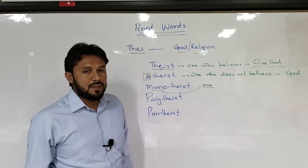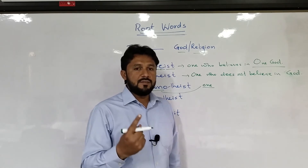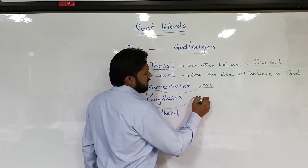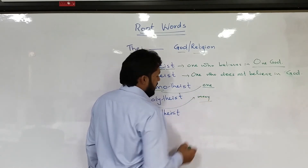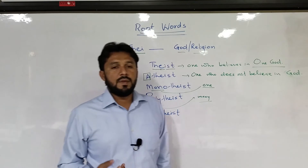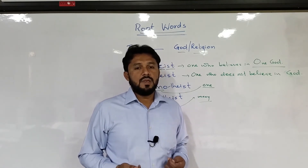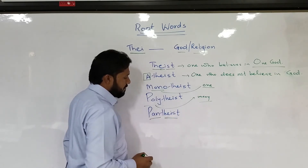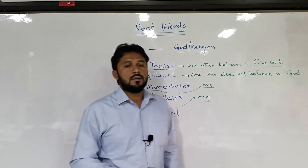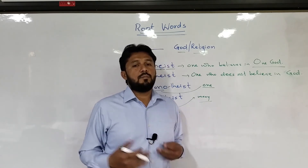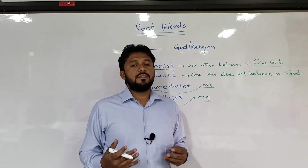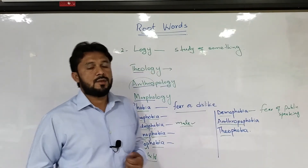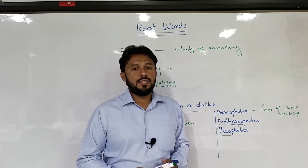Next, 'mono' means one, so 'monotheist' means a person who believes in one God. 'Poly' means many, so 'polytheist' means a person who believes in many Gods. 'Pan' means all around, so 'pantheist' means a person who believes in all Gods.